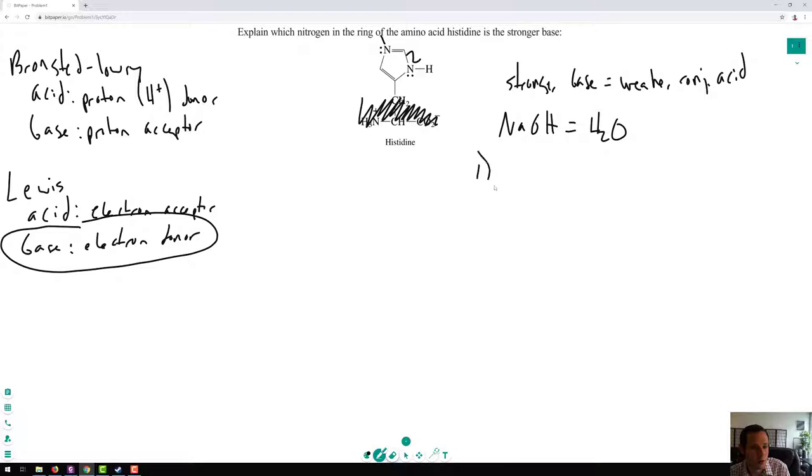So nitrogen 1, the conjugate acid NH+. The conjugate acid of 2 would be NH2+. If we go to our pKa tables from organic chemistry, these two ions aren't in there. So that doesn't really help us. We have to go through a different approach here.